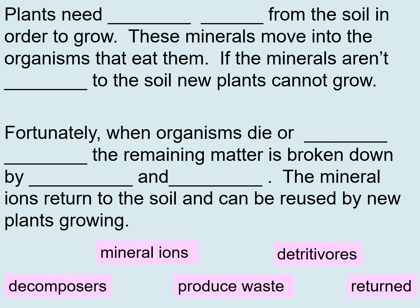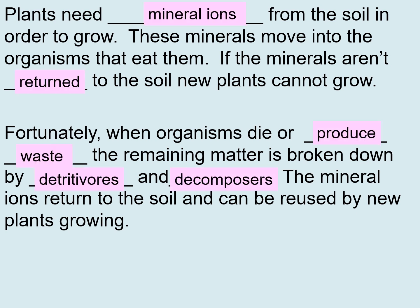Here are the key notes: plants need mineral ions from the soil in order to grow. These minerals move into the organisms that eat them. If the minerals aren't returned to the soil, new plants cannot grow. Fortunately, when organisms die or produce waste, the remaining matter is broken down by detritivores and decomposers. The mineral ions return to the soil and can be reused by new plants growing.